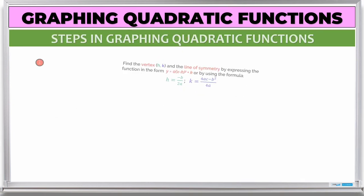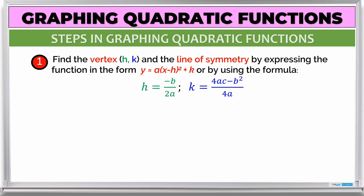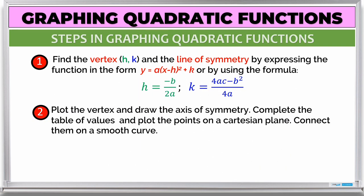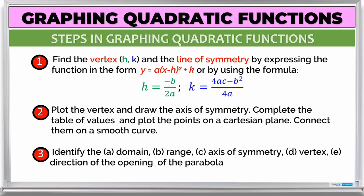To summarize, here are the steps in graphing quadratic functions. Step 1: Find the vertex and the line of symmetry using vertex form y = a(x - h)² + k or the formulas h = -b/2a and k = (4ac - b²)/4a. Step 2: Plot the vertex and draw the axis of symmetry. Step 3: Complete the table of values and plot the points. Connect them with a smooth curve. Step 4: Identify the domain, range, axis of symmetry, vertex, and direction of opening.